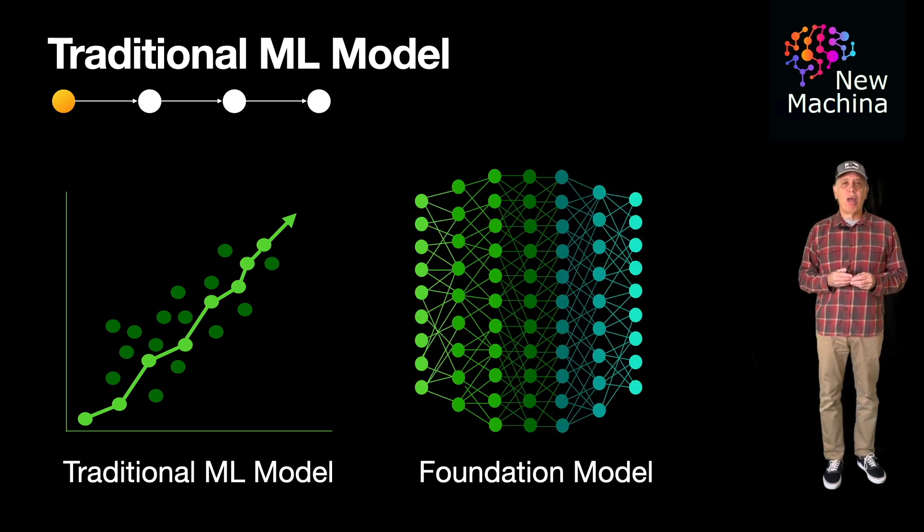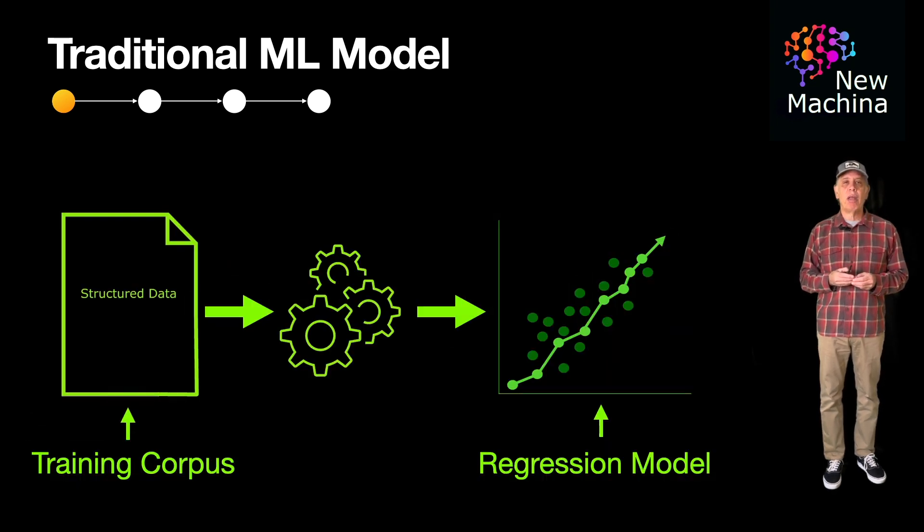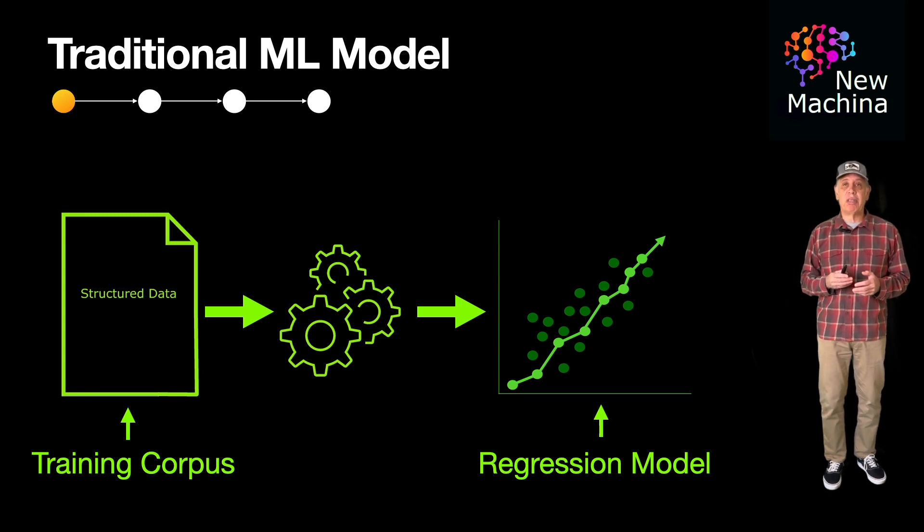With traditional ML models, teams build models for specific use cases. To build a use case specific model, teams start by finding training data needed to train the model. In traditional ML models, this use case specific training data is the training corpus.